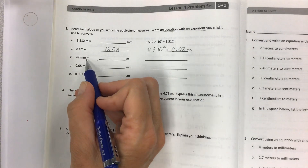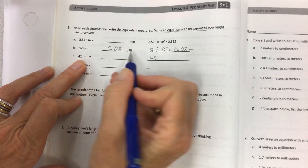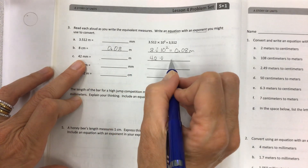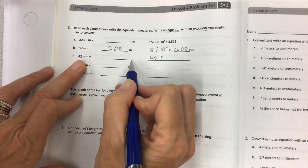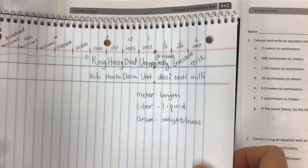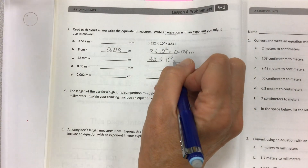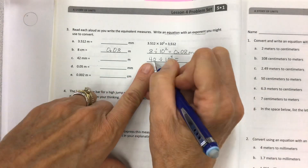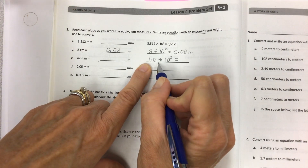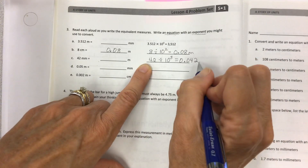Next: 42 millimeters. We're going from small to large, so that's division as well — small units to larger units, we divide. Use your chart: millimeters to meters is a three-position shift, so our exponential form is 10 cubed. It shifts to smaller place value positions: from tens to ones, to tenths, to hundredths. Keep the 42 together, and your new label is meters.